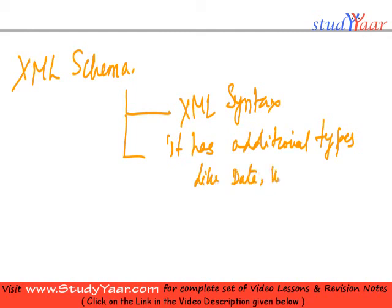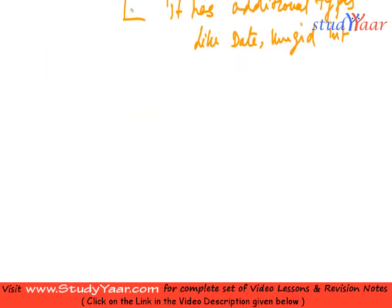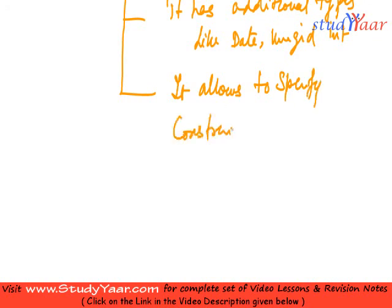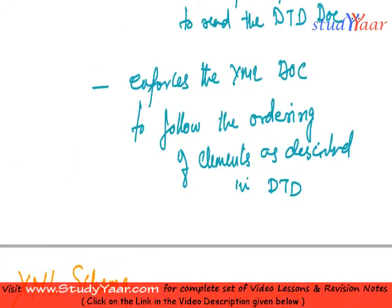Another advantage is it allows to specify constraints like primary key, foreign key, unique key, etc. These are the advantages or features of XML Schema.